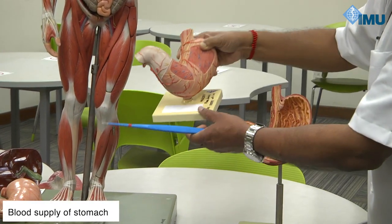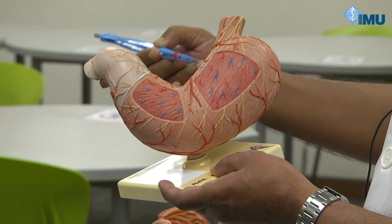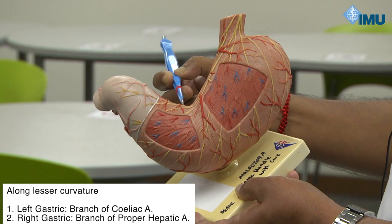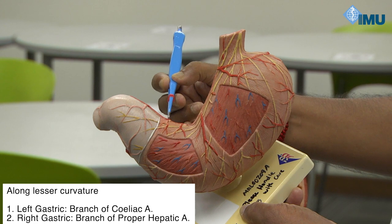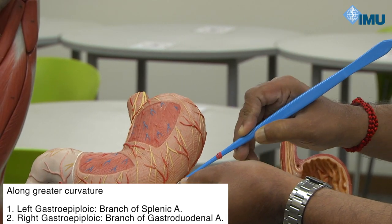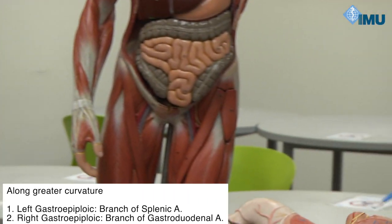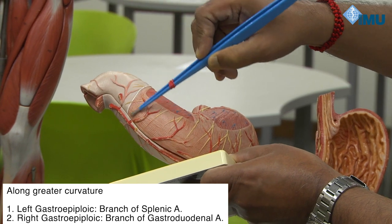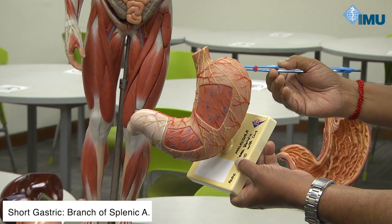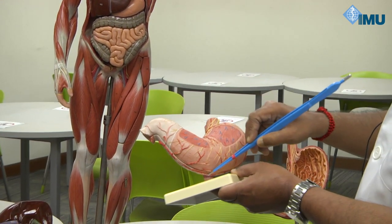Now for the blood supply of the stomach. The celiac trunk gives a very important artery supplying almost two-thirds of the blood supply to the stomach — this is called the left gastric artery, lying along the lesser curvature. There is another artery called the right gastric artery, which comes from the hepatic artery. On the greater curvature, there is the left gastroepiploic artery, which comes from the splenic artery. The right gastroepiploic artery also lies on the greater curvature and comes from the gastroduodenal artery. There is another artery behind the fundus called the short gastric artery, which also comes from the splenic artery. So left gastroepiploic and short gastric arteries come from the splenic artery; right gastroepiploic comes from the gastroduodenal artery.